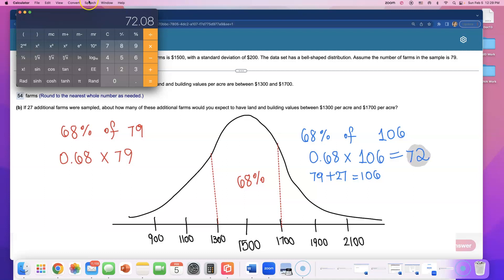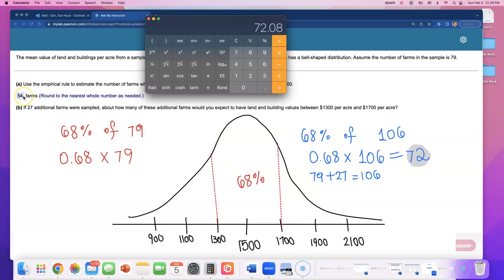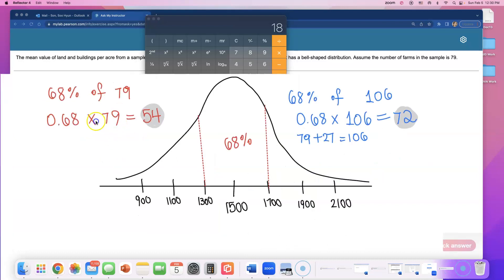We now need to compare the difference between 72 farms and the number we got earlier, the 54 farms. Because remember, before we added new farms we had only 54 farms that are in between this range. Find the difference by doing 72 minus 54, that comes out to be about 18. So my final answer will be 18.